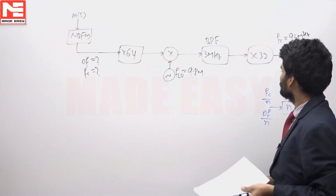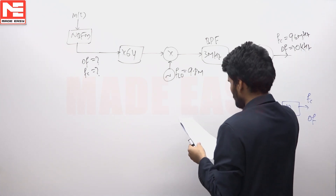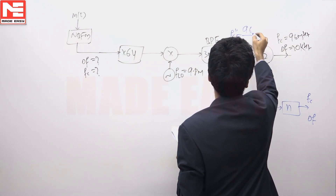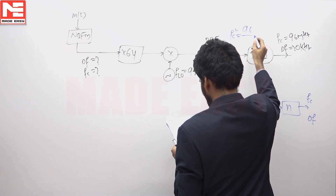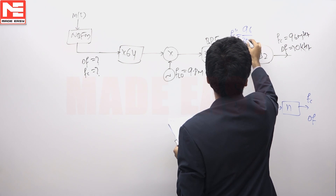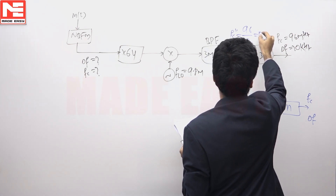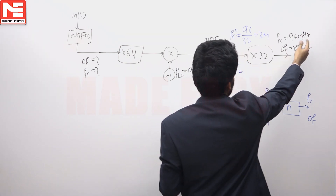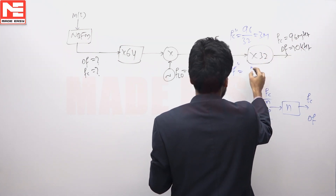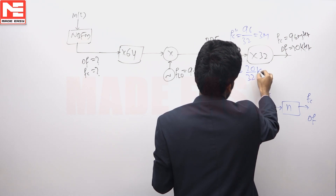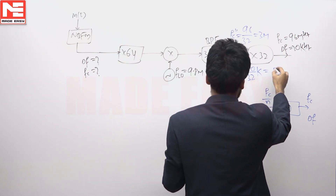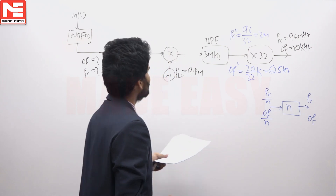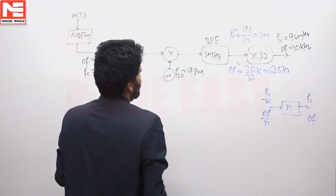Working in reverse at the input of the 32x frequency multiplier: the carrier frequency fc is 96 MHz divided by 32, which gives 3 MHz. The delta f is 20 kilohertz divided by 32, which equals 625 hertz.